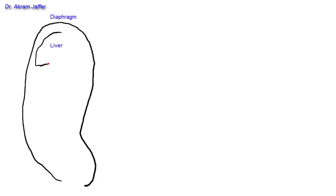The liver has a diaphragmatic surface and a visceral surface. This is the visceral surface of the liver, returning back to the diaphragmatic surface. Then here's the stomach — the wall of the stomach — and I'll put some rugae here to indicate that it's a stomach.